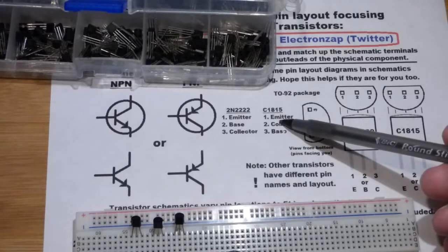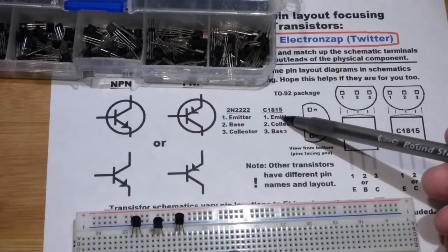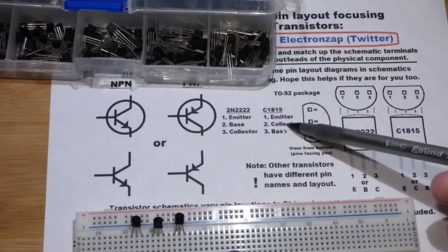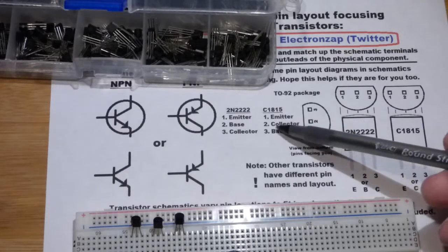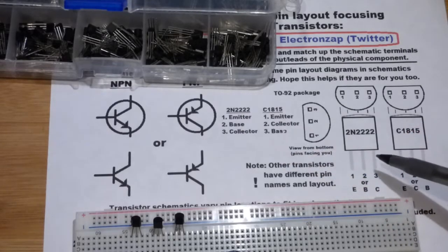When I found the datasheet, pin number one was the emitter. Pin number two now is the collector. And pin number three is the base. So these two pins are opposite from these two pins.